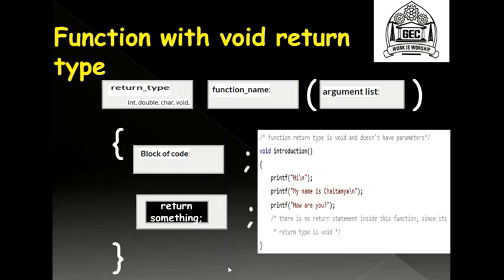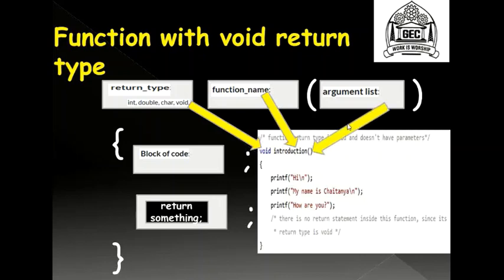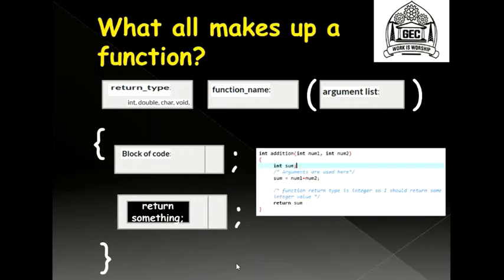The basic function structure is: return type void, function name here is 'introduction', argument list is empty. The block of code includes printf('Hi'), printf('My name is Chaitanya'), printf('How are you'). In this function we do not have any local variable declaration. This is a void return type, so it need not return anything. Even if you wrote 'return;' it wouldn't be wrong. Then I close the curly brace.